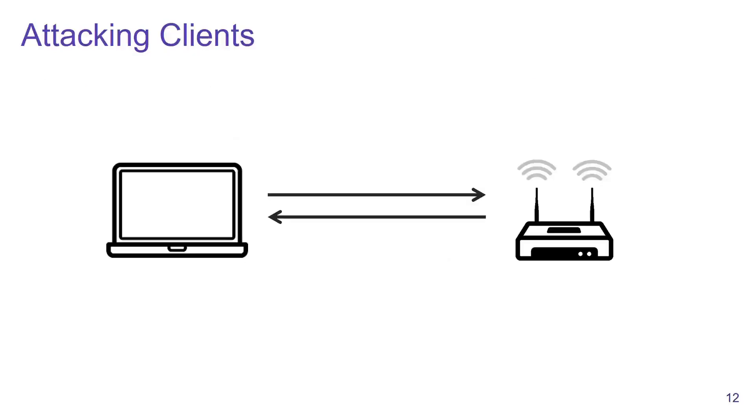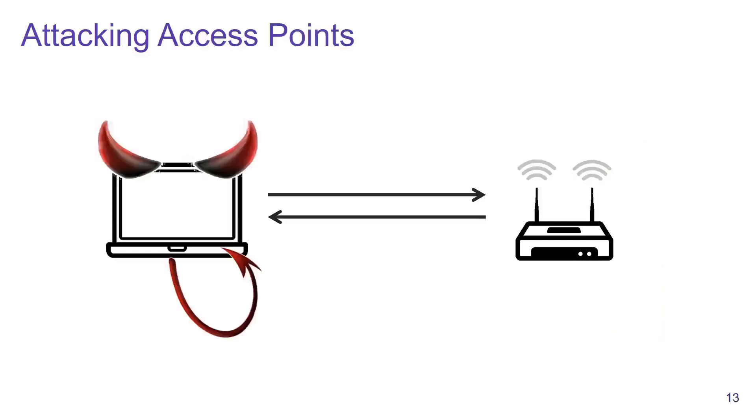We have two attack scenarios. The first attack scenario is that we can act as a malicious access point and induce clients into connecting to us, or we can pretend to be a malicious client and attack an access point. In both cases, we will measure how many iterations the other device is executing.